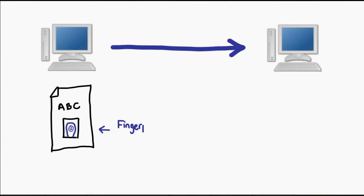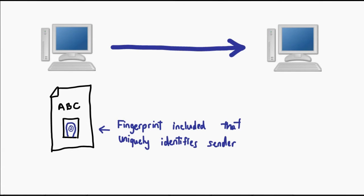Practically, to achieve non-repudiation, we actually have to include some kind of fingerprint on the side of the sender. The way we set things up is such that the sender is the only person who could have generated this fingerprint, and as a result, it proves they sent it. Those were the four principles behind computer security in general.